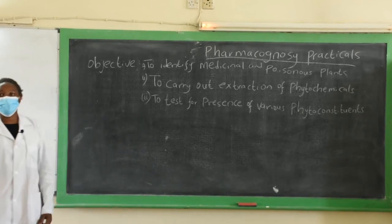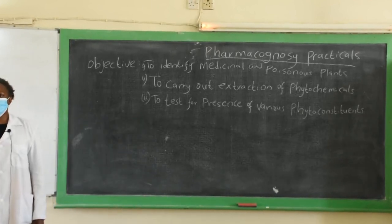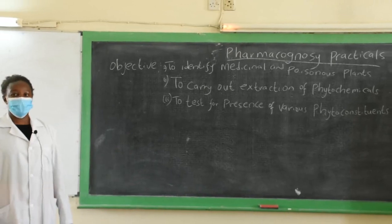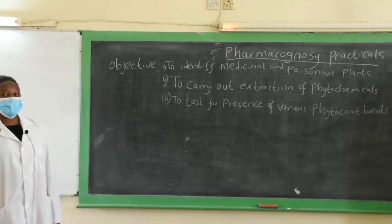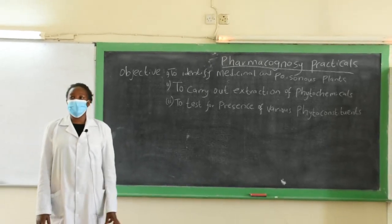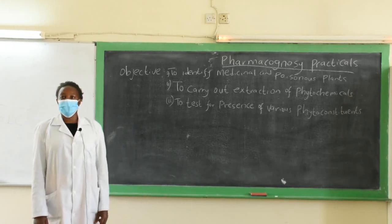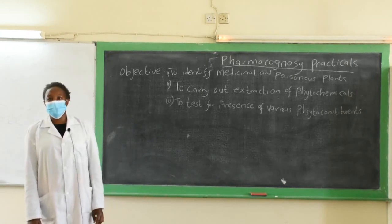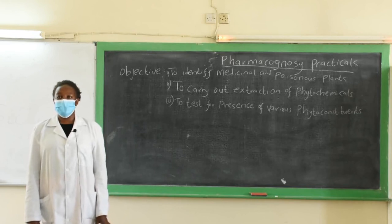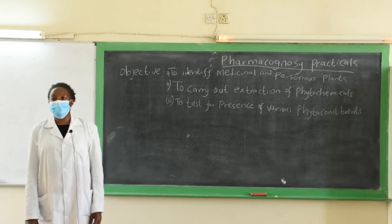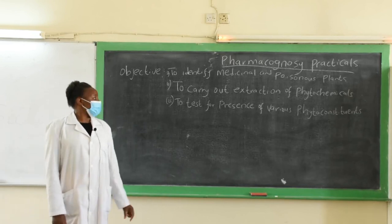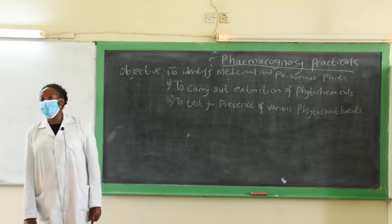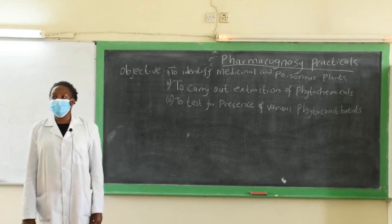In the third practical we are going to test for the phytochemicals that we have extracted. We will carry out tests for presence of alkaloids in a plant sample, test for presence of saponins, test for presence of cardiac glycosides, and any other phytoconstituent that we may have extracted.